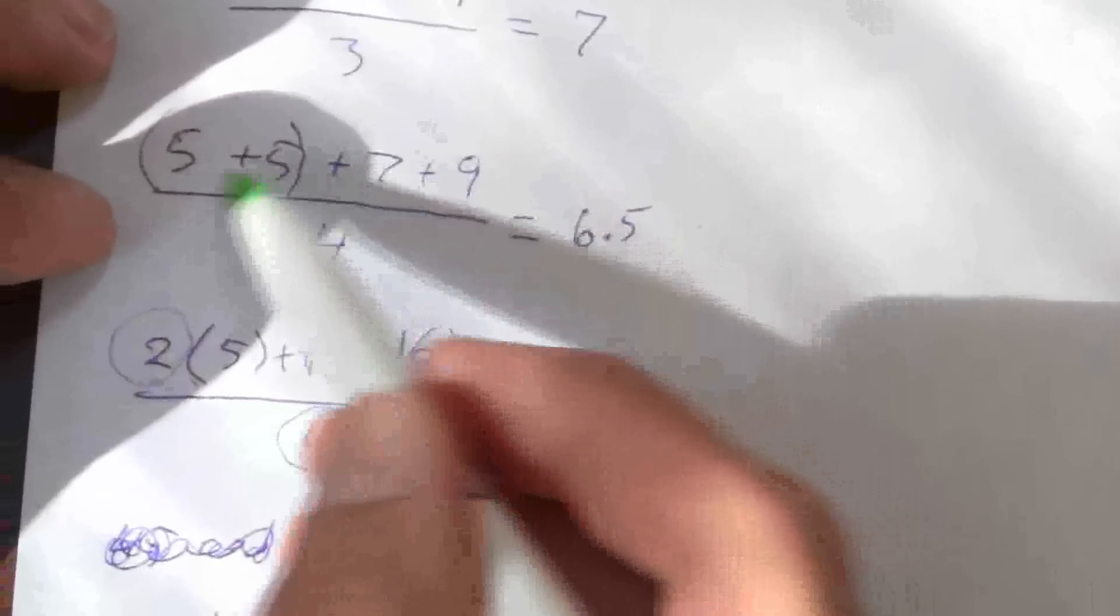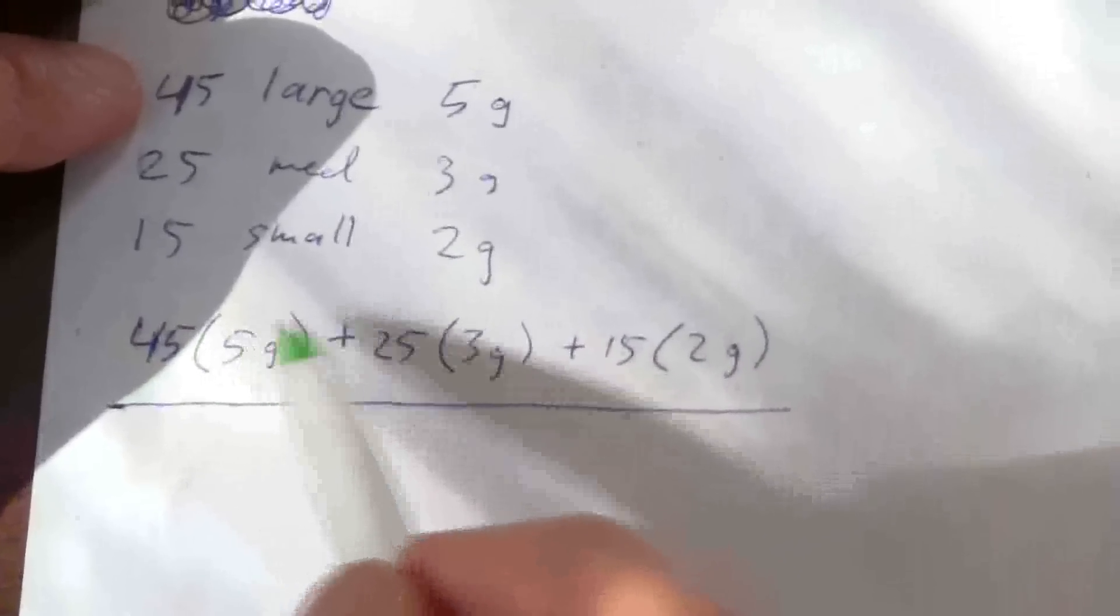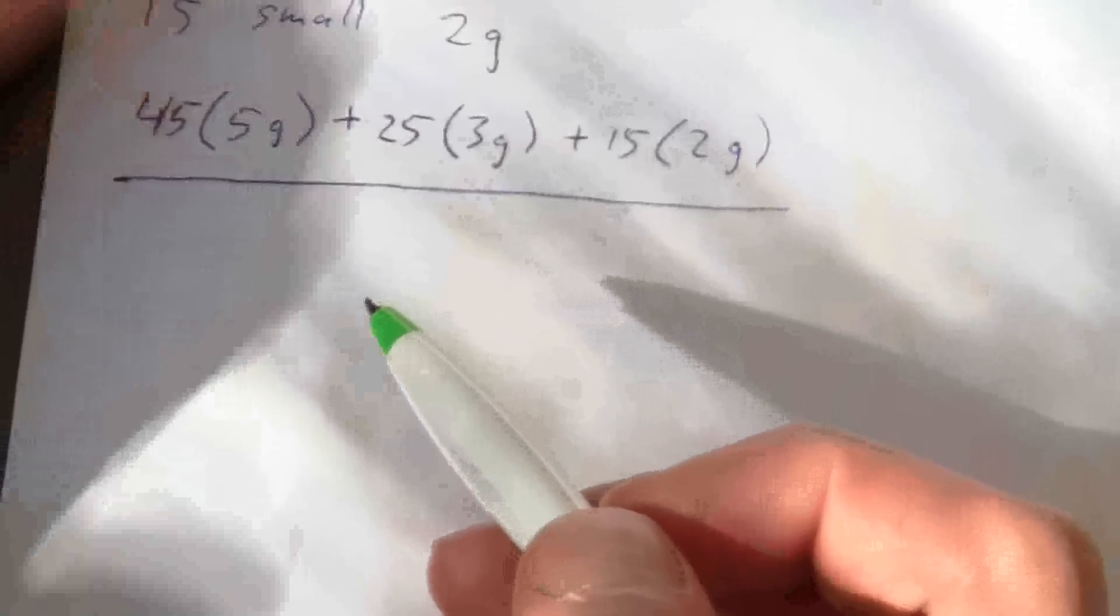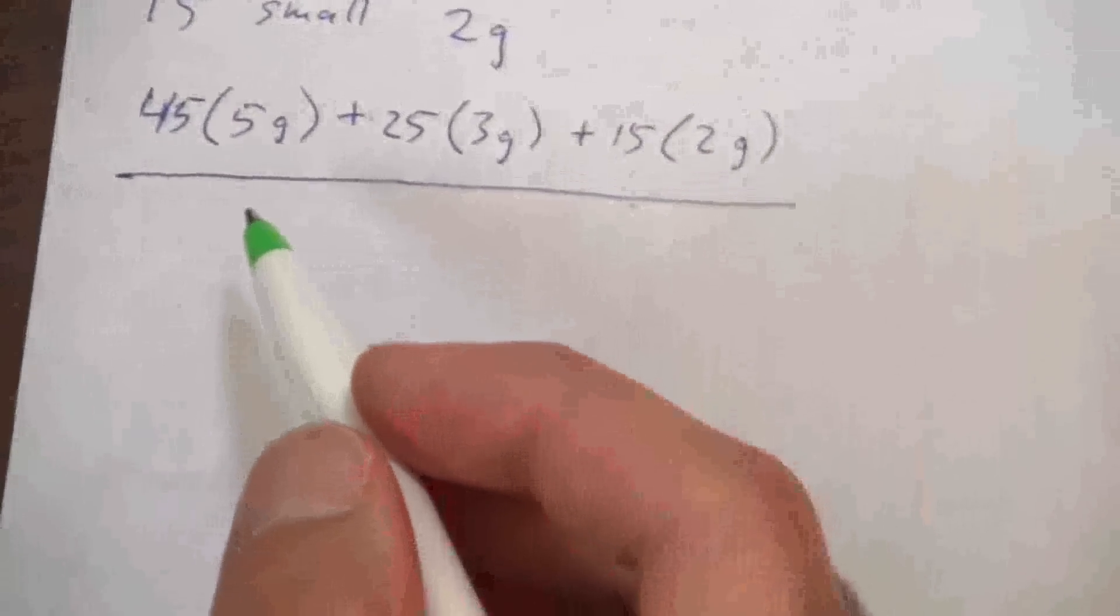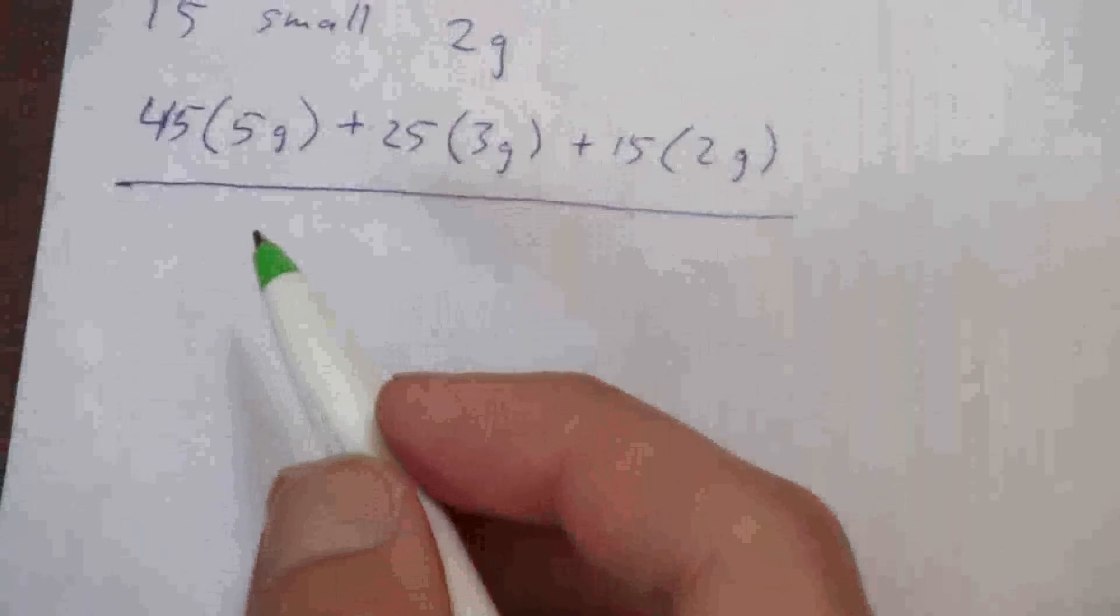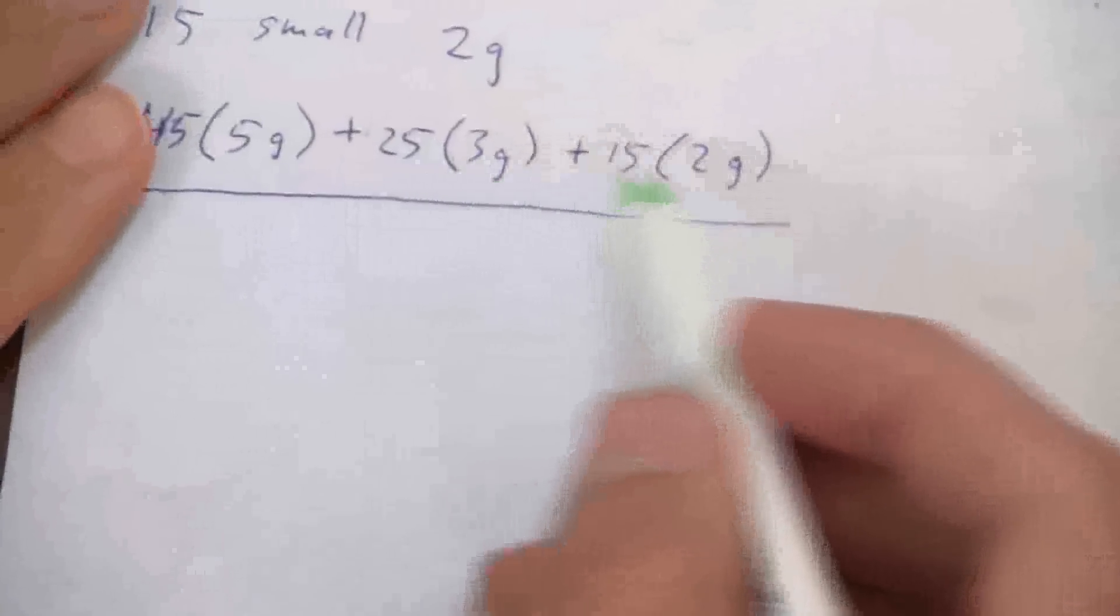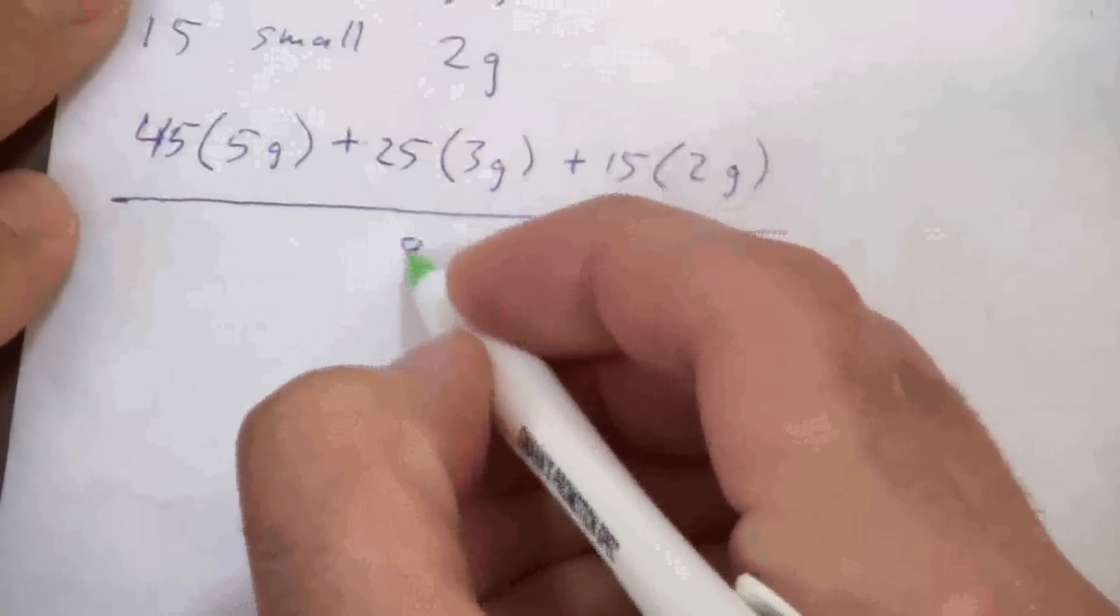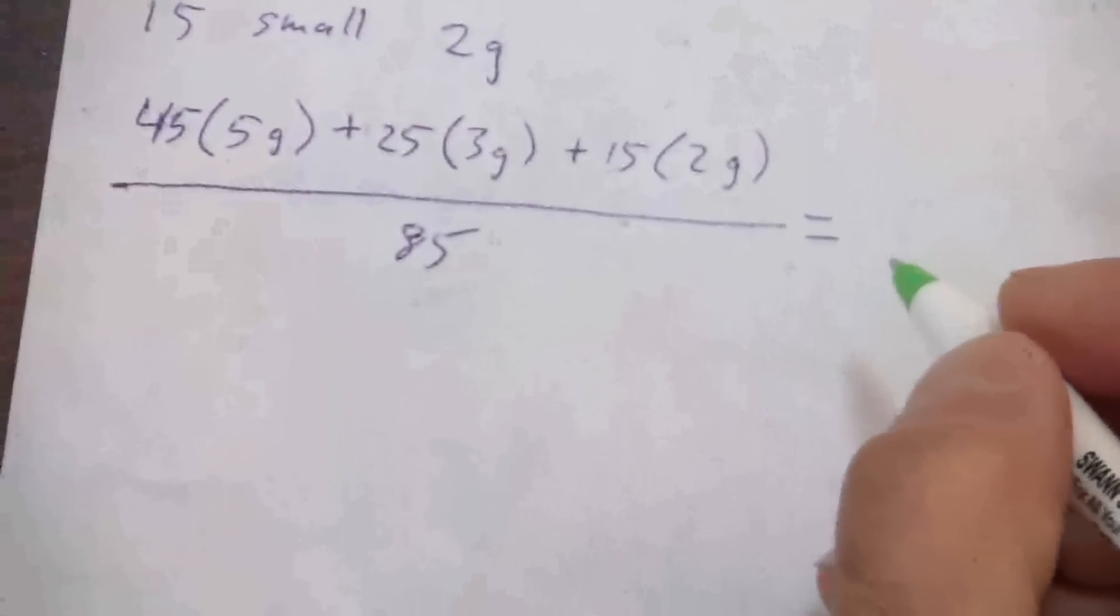But when I have multiples of each value, I can combine those and then that's the weight of that value in the equation for the average. So what I'm dividing this by is my 45 plus 25 plus 15, so that gives me 85.